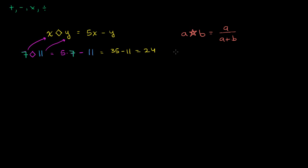And so same idea. What would 5 star 6 be? Well, you go back to the definition. By definition, every place where you see the a, you would now replace with the 5. Every time you saw the b, you would now replace with the 6.